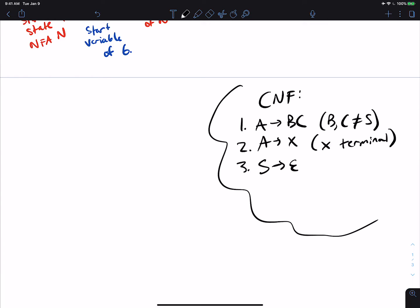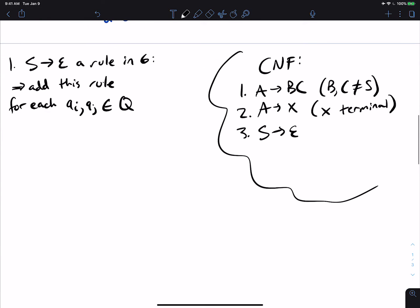So let's handle each of those at once. So let's do, let's see, let's do S goes to epsilon a rule in G. So if it is a rule in G, then we will add this rule, which is this. So for each pair QI, QJ in the set of states of the NFA, such that QI is reachable, sorry, QJ is reachable from QI on epsilon.